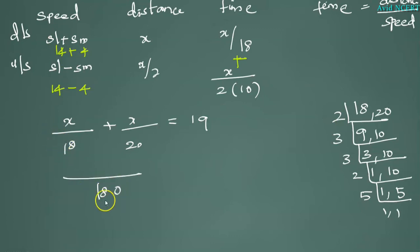180 divided by 18 is 10, so multiply 10 above, which is 10X. 20 times 9 is 180, multiply 9 for the numerator, so 9X equals 19.